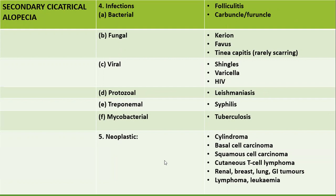Infections causing secondary cicatricial alopecia include bacterial infections such as common folliculitis and carbuncle, then fungal — kerion mainly, favus, and tinea capitis rarely — then viral infections like shingles, HIV, and varicella, then protozoal infections like leishmaniasis, treponema syphilis — primarily gummatous syphilis — then mycobacterium tuberculosis.